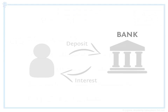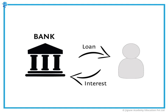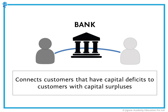By definition, what is a bank? There are people in the economy who have extra money. They go and keep this money in an institution called a bank, and the bank gives them some interest on this money. The bank further lends out the money to people who have a requirement for money. These people are ready to pay the bank interest to get their hands on this money. Thus, the bank is an intermediary between these two types of people in the economy, connecting customers that have capital deficits to customers with capital surpluses.